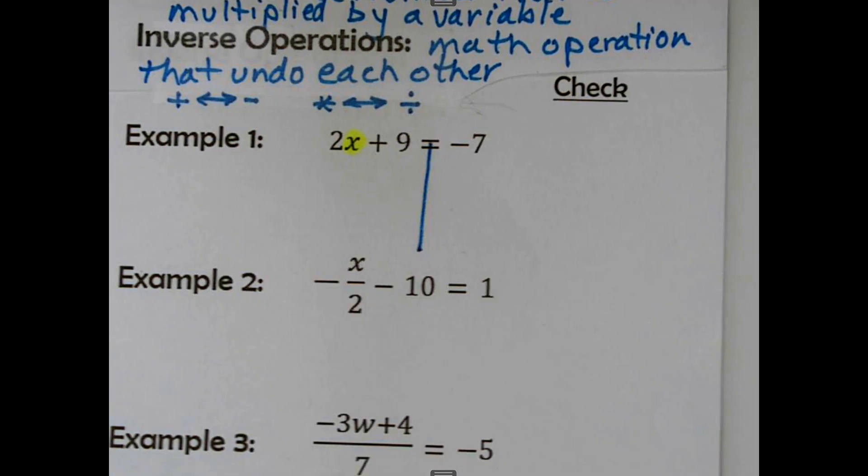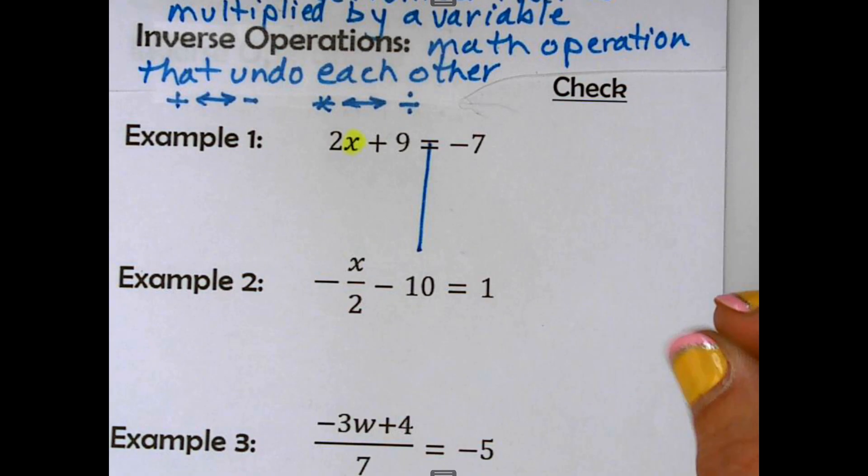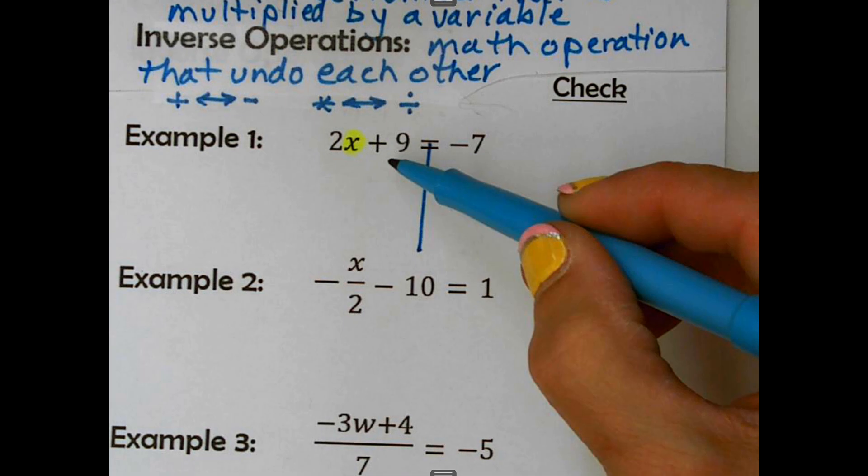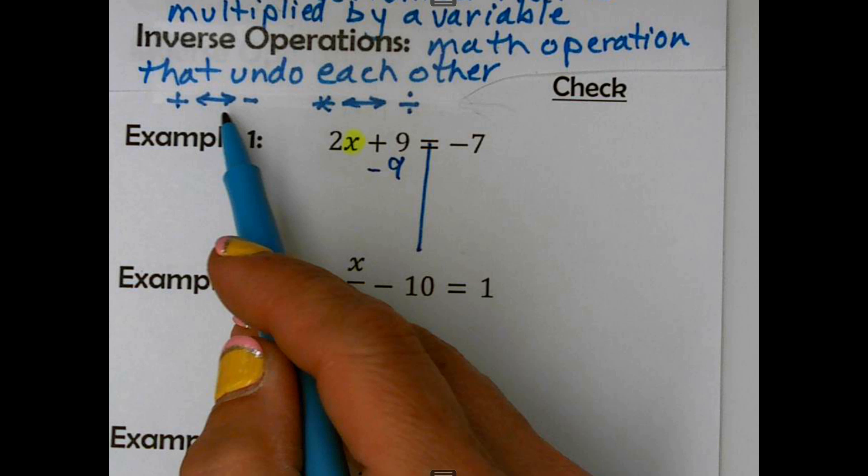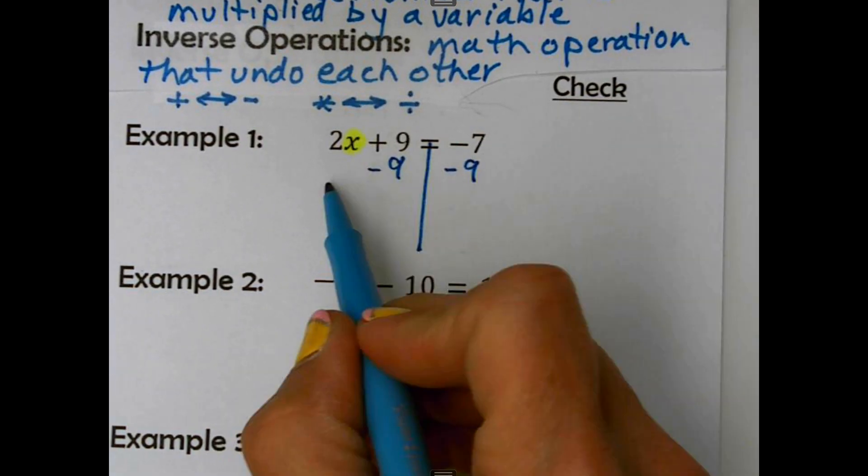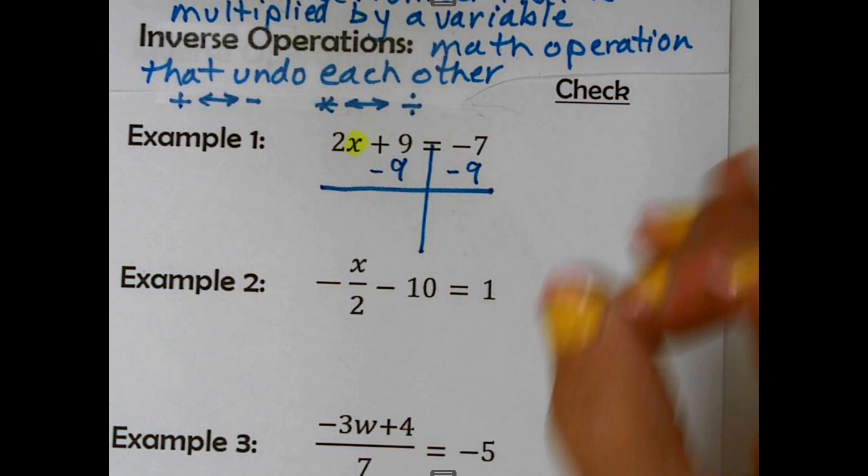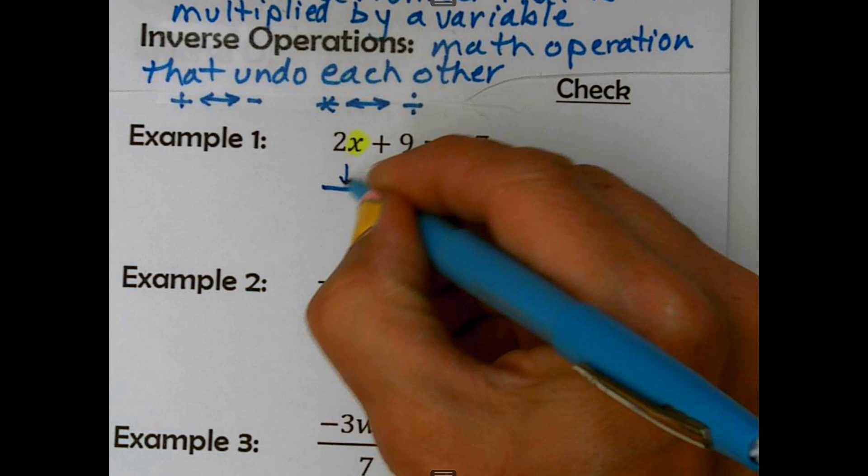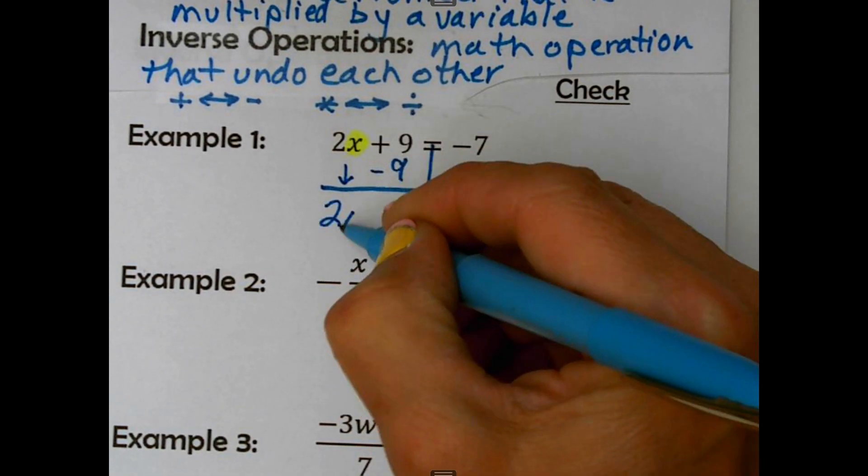So the first thing I'd like you to do is draw that vertical line. We're going to keep this equation balanced. So if I do something to one side, I have to do it to the other. This is saying plus 9, the inverse operation of addition is subtraction, and you had that right there in your notes. So I do that to both sides. Now, I'm going to go through the math a little bit quicker. You can always pause it, use a calculator just to verify.